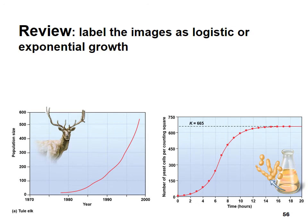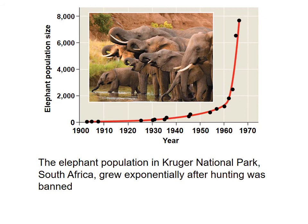Let's label images as logistic or exponential growth. The first picture shows a species reintroduction — exponential growth with no limiting factor, a J-shaped curve that doesn't flatten. The second shows bacteria in a flask — logistic growth with a carrying capacity K around 665, producing an S-shaped curve where growth levels off. The elephant population in Kruger National Park grew exponentially after hunting was banned, though they will eventually reach a carrying capacity.